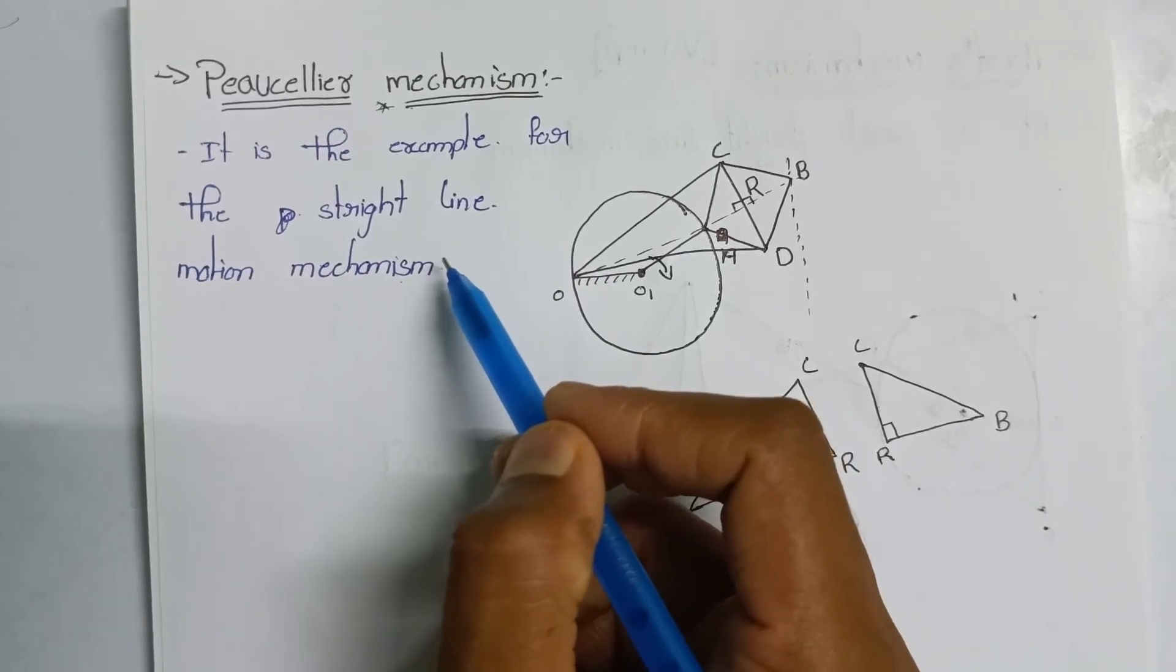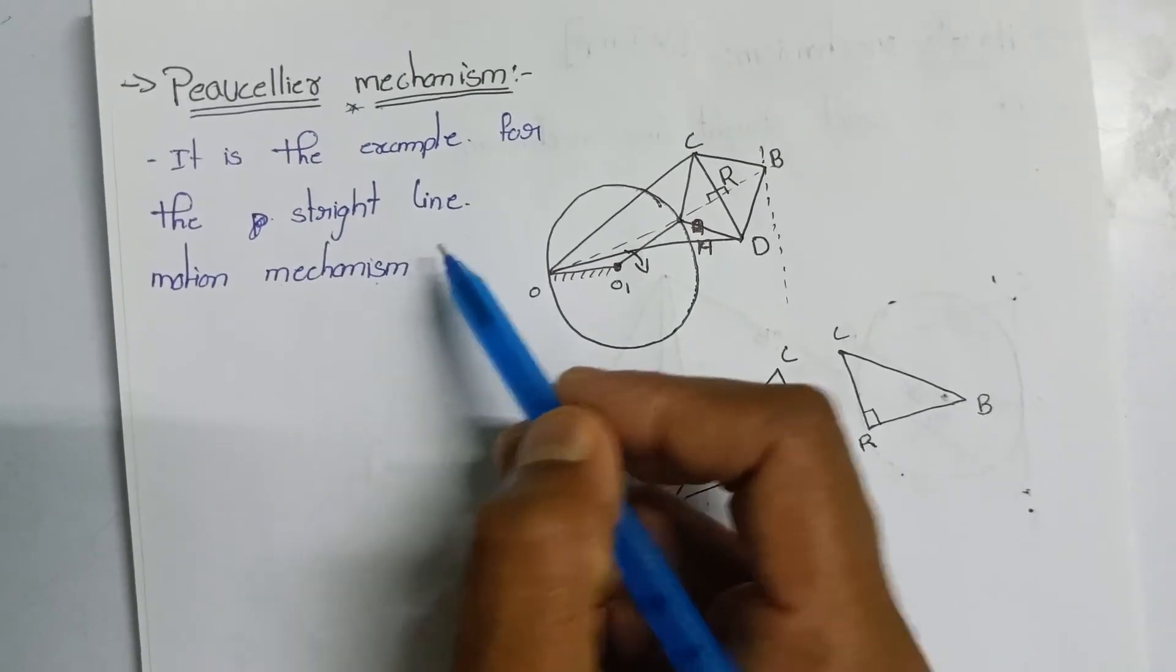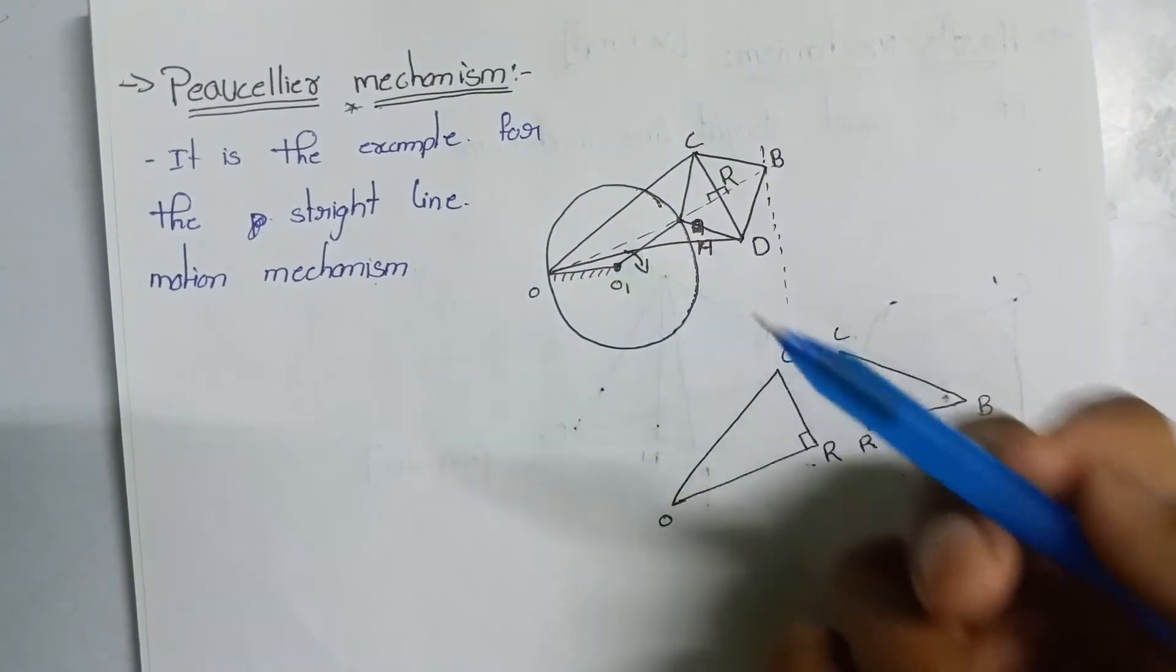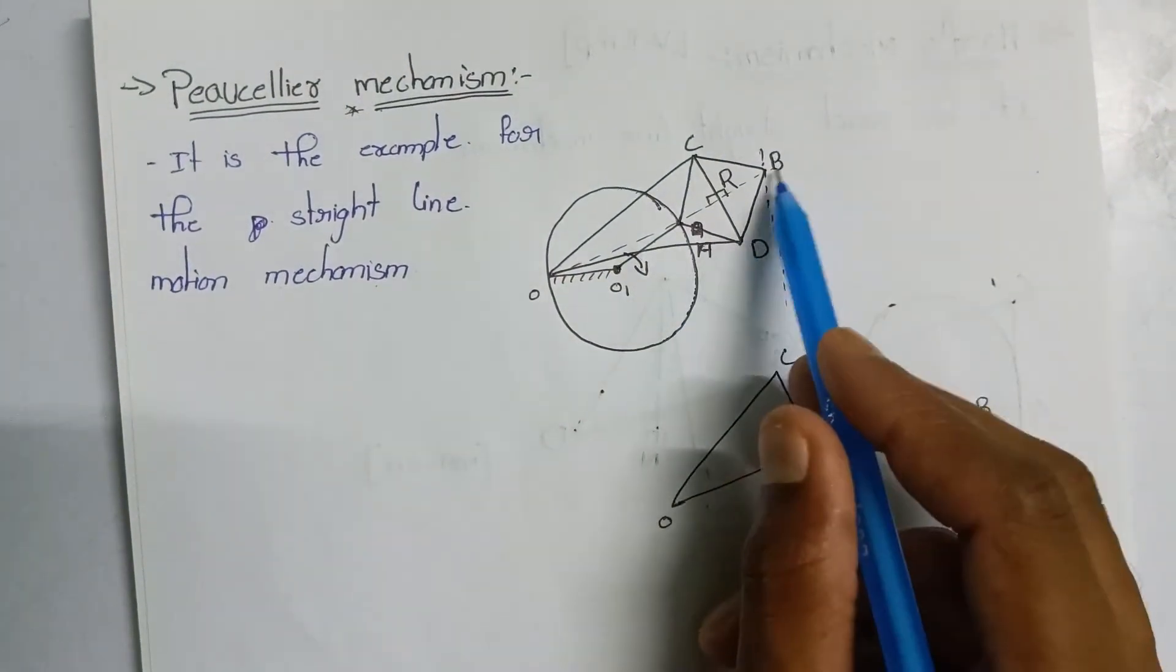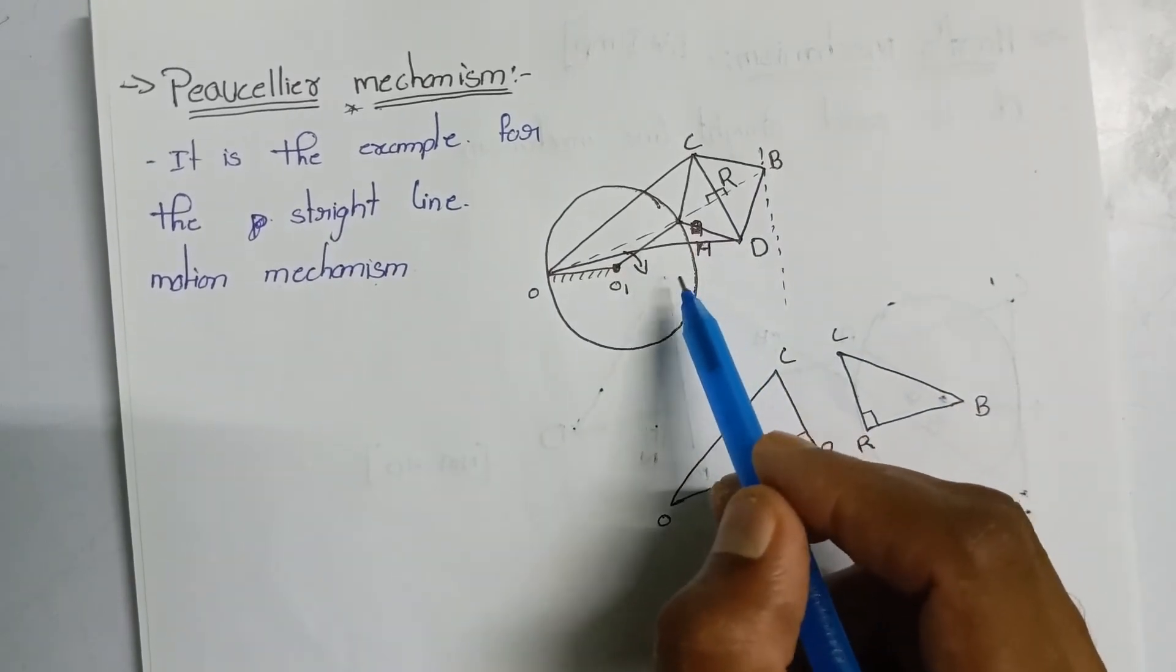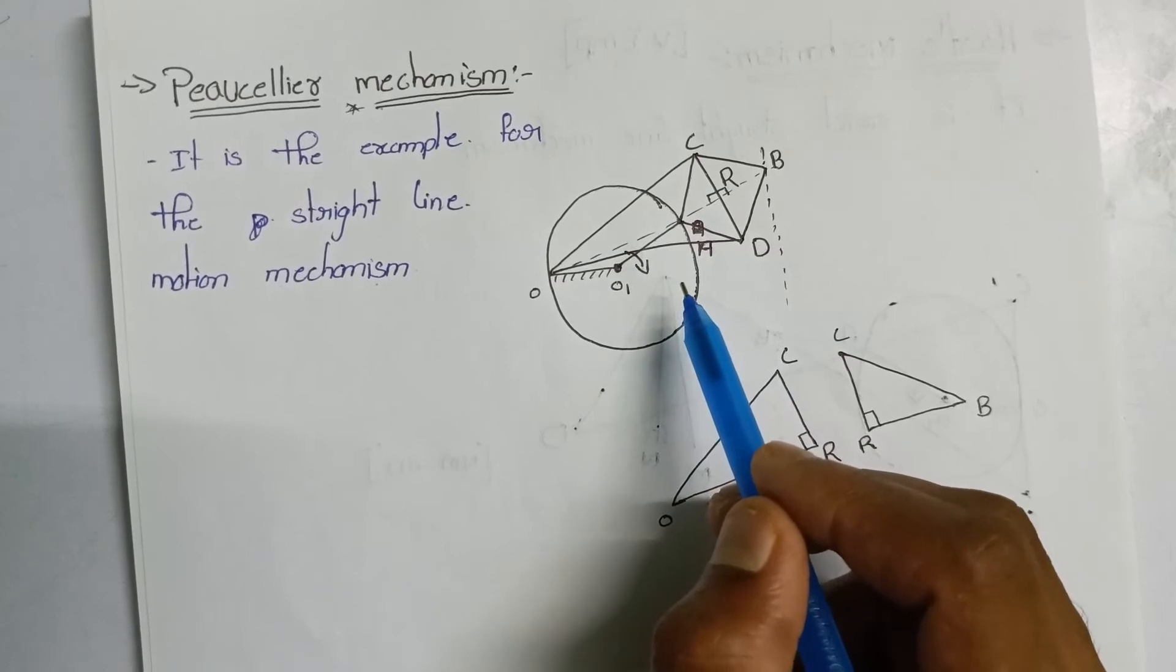In the last video, the Exact Straight Line Motion Mechanism condition derivation was covered. This is an example of the Exact Straight Line Motion Mechanism. This mechanism is used for exact straight line. The diagram is very simple.